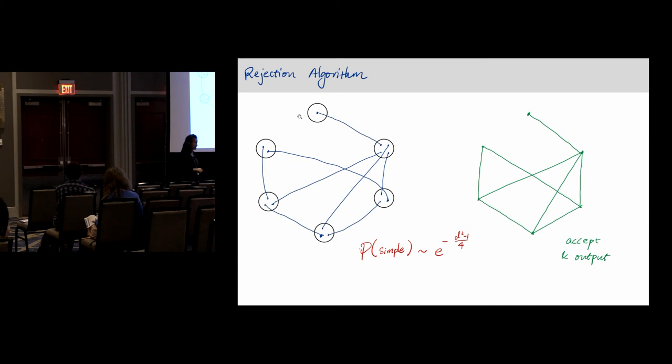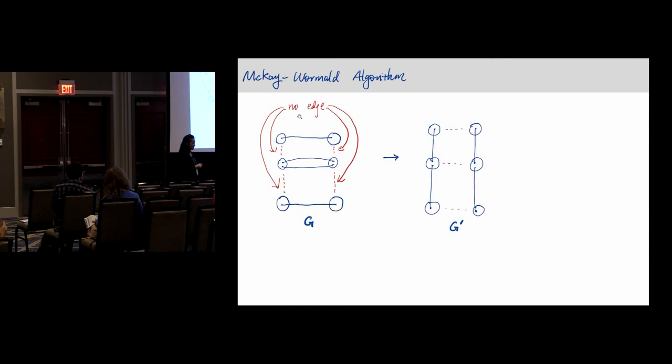The probability of being simple is not that large once the degree becomes more than square root of log n. The number of iterations or the number of times you have to sample becomes super-polynomial. That's why Bollobás's algorithm, I call it algorithm even though he didn't give the algorithm, but that algorithm would fail.